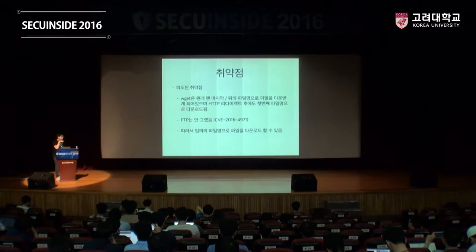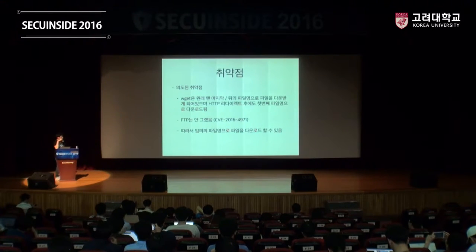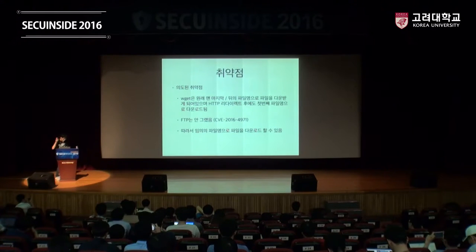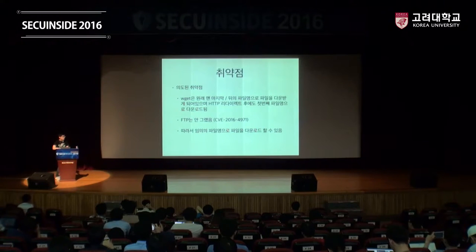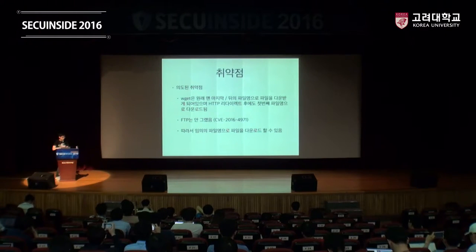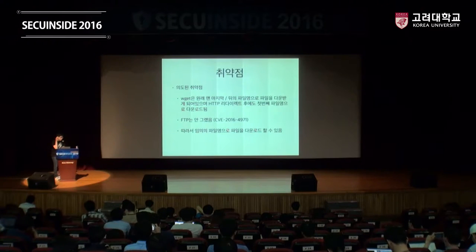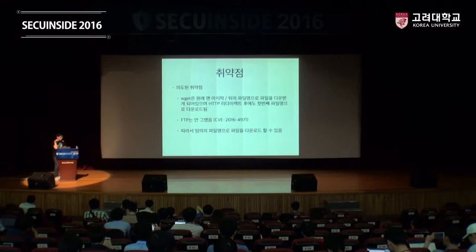의도된 취약점은 wget에서 원데이가 있었는데 이게 CVE-2016-4971이거든요. wget의 -O 인자로 출력파일을 지정할 수 있잖아요. 여기서 원래 처음 URL에서 redirect가 된다 해도 처음 URL의 path를 딴다고 해요, 출력되는 파일명이. 그런데 HTTP to FTP redirect의 경우는 안 그랬어요. 그냥 FTP에 있는 파일명으로 다운로드가 됐었던 거예요.